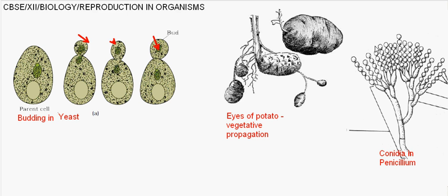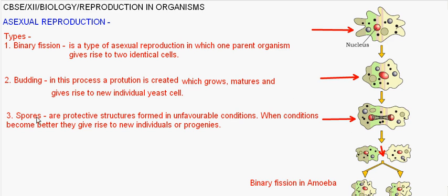The fourth type is vegetative propagation. In this process, different parts of a plant can be cut, separated, and used to grow new individuals. For example, the eyes of a potato — if you cut the eyes of a potato and plant it in soil, new potato plants will grow. The same is applicable for sugar cane, rose plants, and so on.